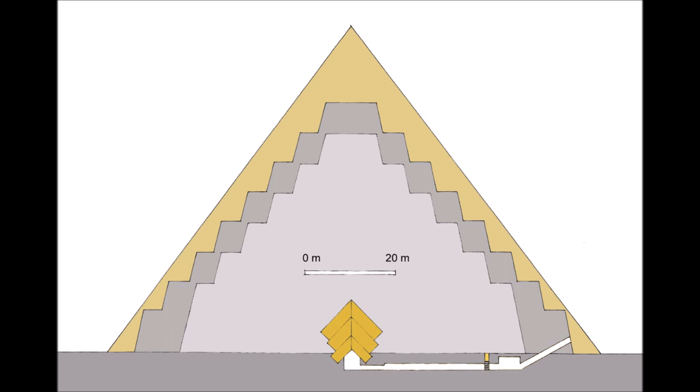Abusir assumed great importance in the 5th dynasty after Userkaf, the first ruler, built his sun temple and his successor Sahure inaugurated a royal necropolis there with his funerary monument. Sahure's successor, his son Neferirkare, was the second ruler to be entombed in the necropolis.